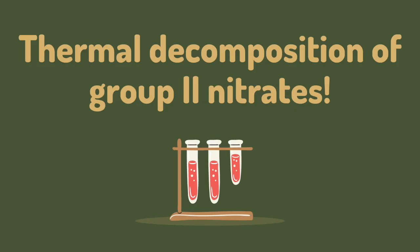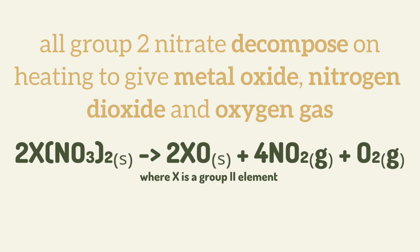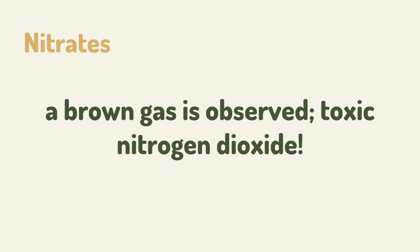Next, we have the thermal decomposition of Group 2 nitrates. All nitrates of the second group decompose on heating to give off metal oxide, nitrogen dioxide, and oxygen gas. The formula for this reaction is shown on the screen, where X is a Group 2 element. After this reaction, a brown gas is observed. This is nitrogen dioxide, which is a toxic substance.